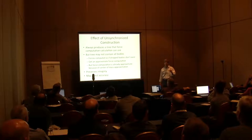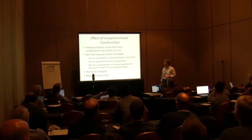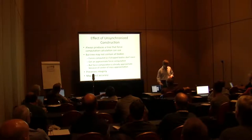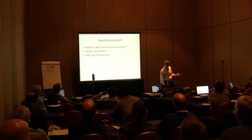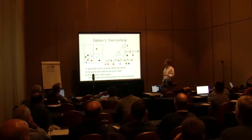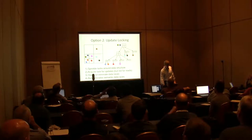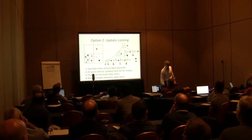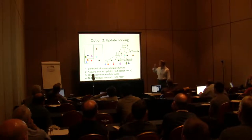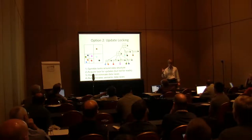What's the effect of a missing body? The forces are computed as if those bodies didn't exist for that simulation step — an approximate force calculation. But notice I already have an approximate force calculation because of the center of mass approximation. It preserves integrity but may affect accuracy. What if I don't want to drop bodies? Option one: add synchronization with tree locking — bodies acquire and release locks as they go down. This eliminates data races, but you also have to synchronize reads. Option two: update lock — acquire the lock only if actually doing an update. For this data structure, this doesn't eliminate data races but eliminates all semantic data races and preserves the key natural properties P1 through P4.